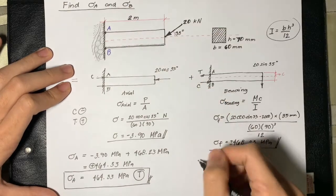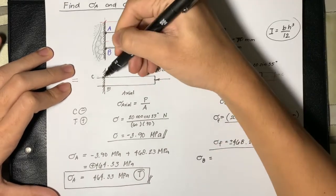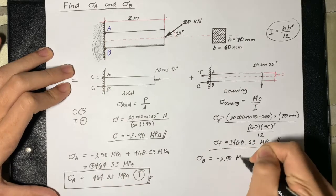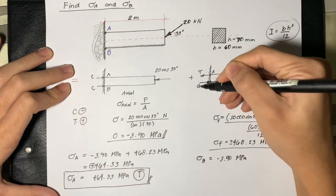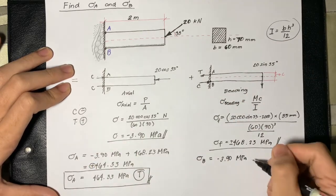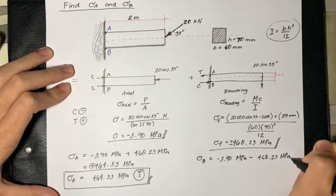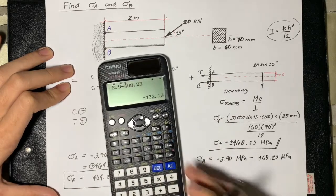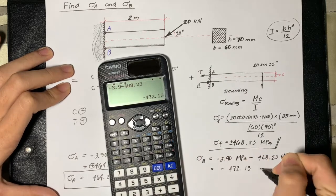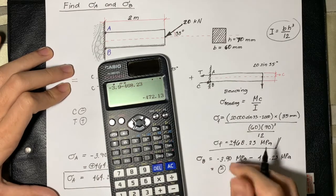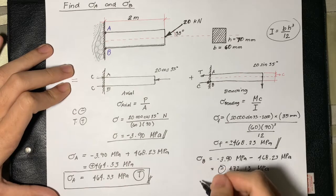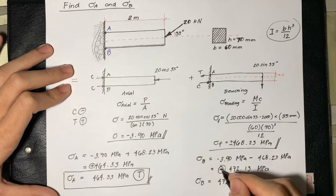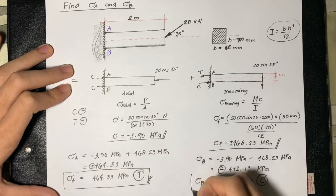Solving for the stress at B, we have negative 3.9 MPa. Since it is compressive, we will use negative 468.23 MPa. Using the calculator again, we just need to change the sign. We get negative 472.13 MPa. This represents the stress at B. Since it is negative, we can say that it is a compressive stress.